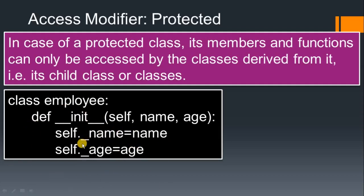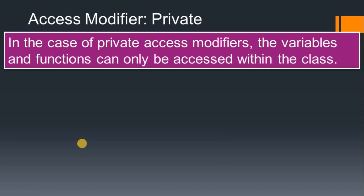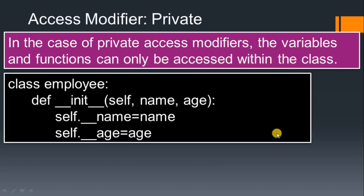Private means it has a limitation — the variable and function can only be accessed within a class. We use double underscore to represent private access specifiers. You can use it only within a class; by using an object we cannot access this value from outside. Now we will go to the practical session and use all kinds of access specifiers.